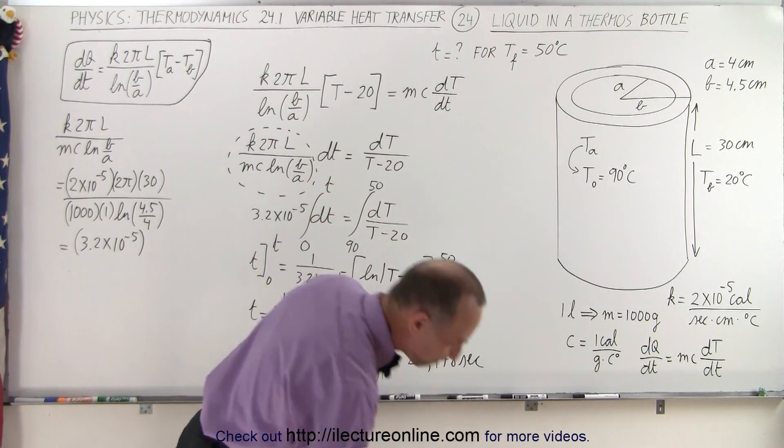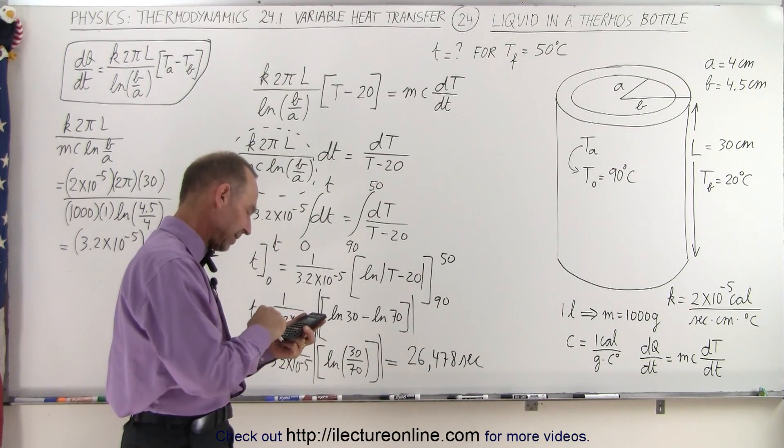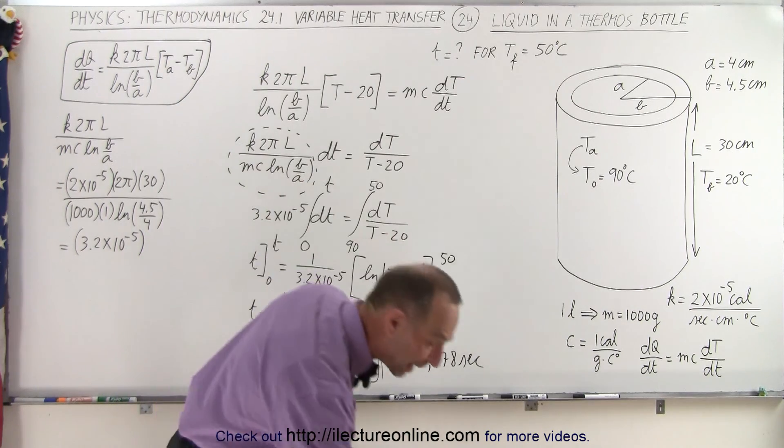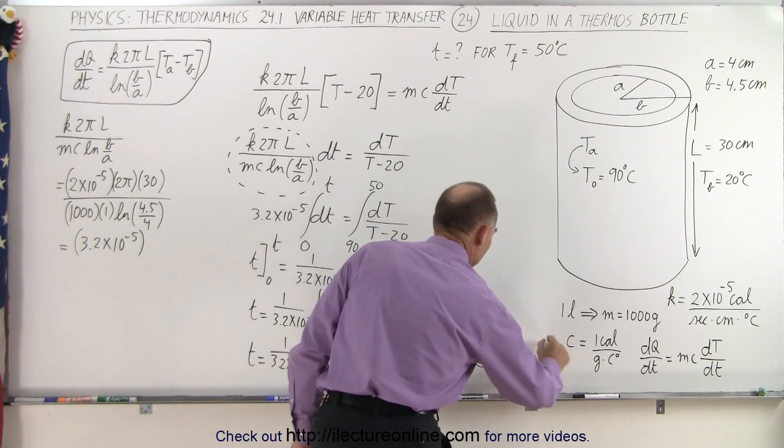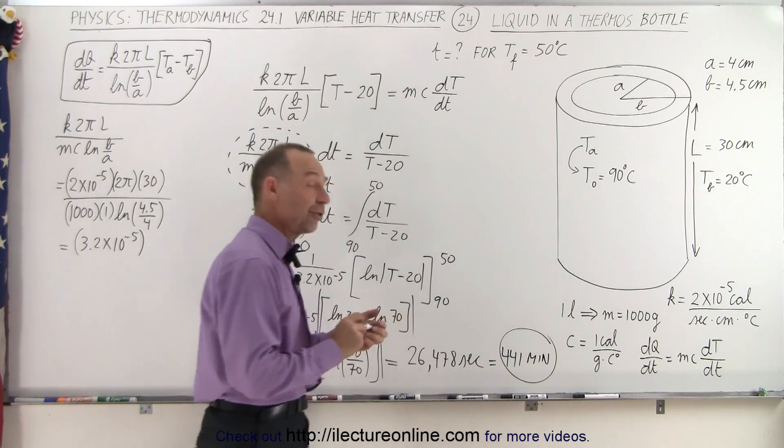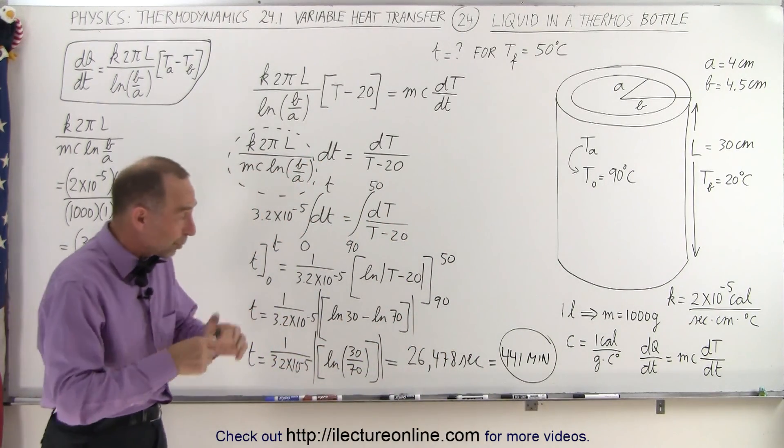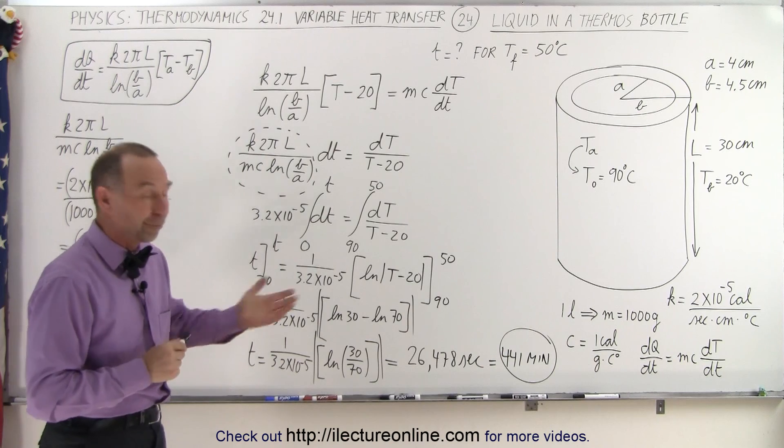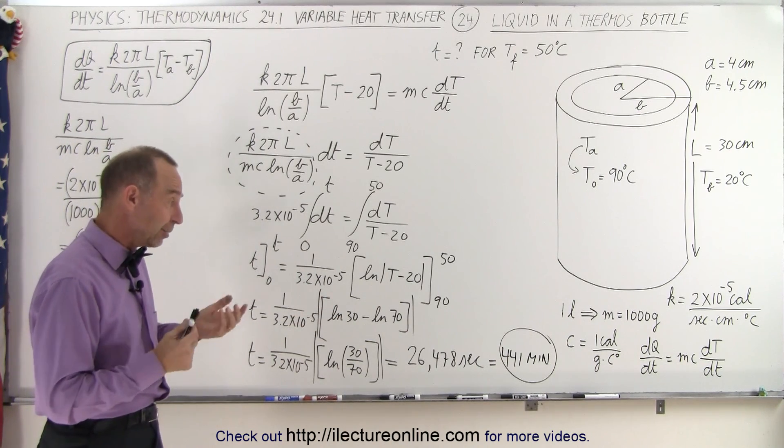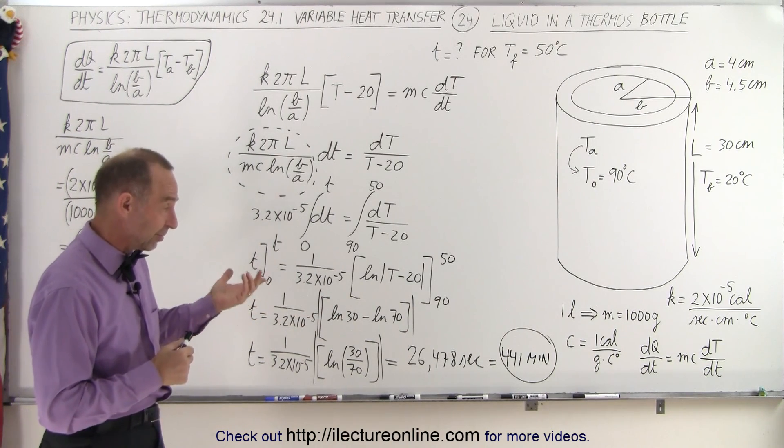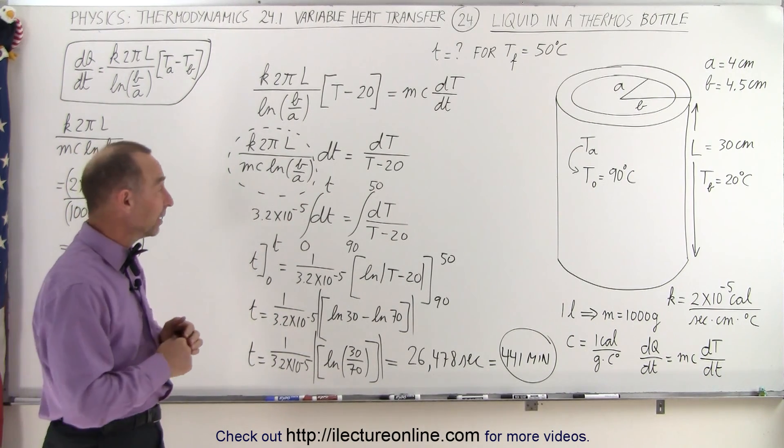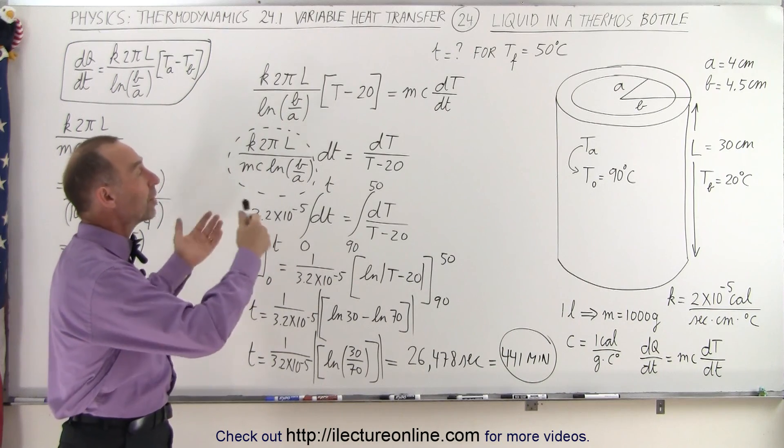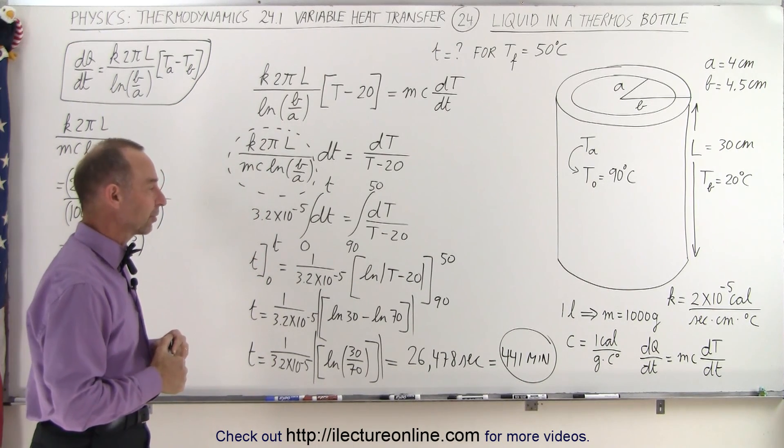Now, if we divide that by 60, that gives us 441 minutes. And that would still be pretty good. So if a thermos bottle can keep your liquid warm, the hot coffee warm for 441 minutes, that's about six or seven hours and still keep it at 50 degrees centigrade, that's a pretty good thermos bottle. And so that's the basic model of how a bottle like that works.